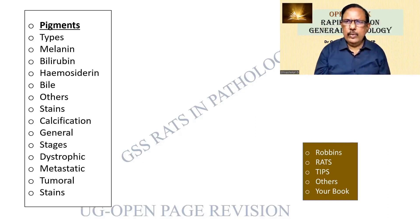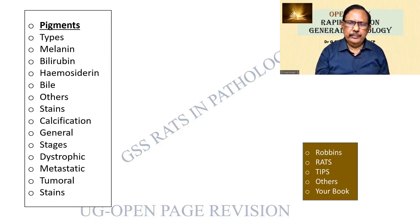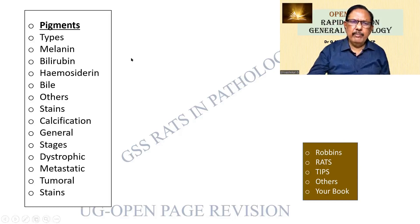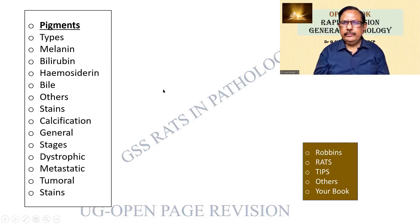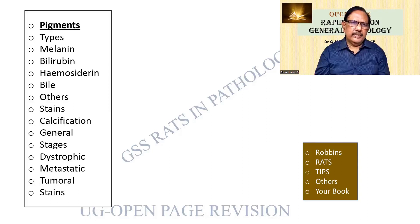Lipofuscin is another one — the aging pigment. See whether it is given. Hemosiderin is extremely important because there is a condition called hemosiderosis and hemochromatosis. We will see that under other diseases, but it is extremely important.